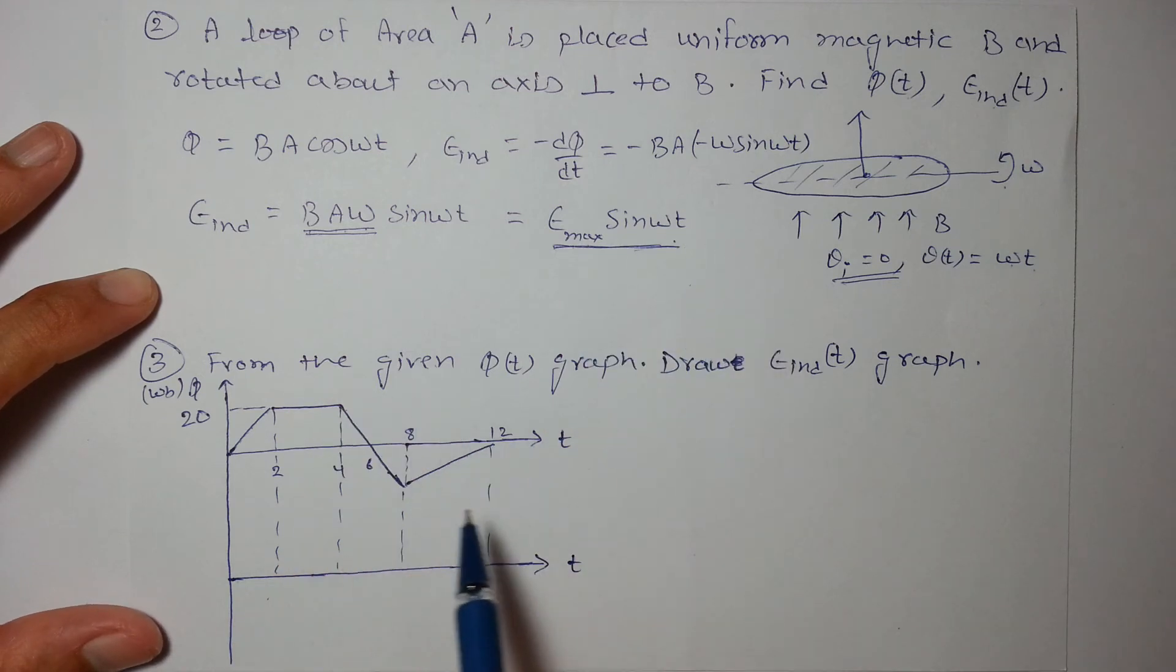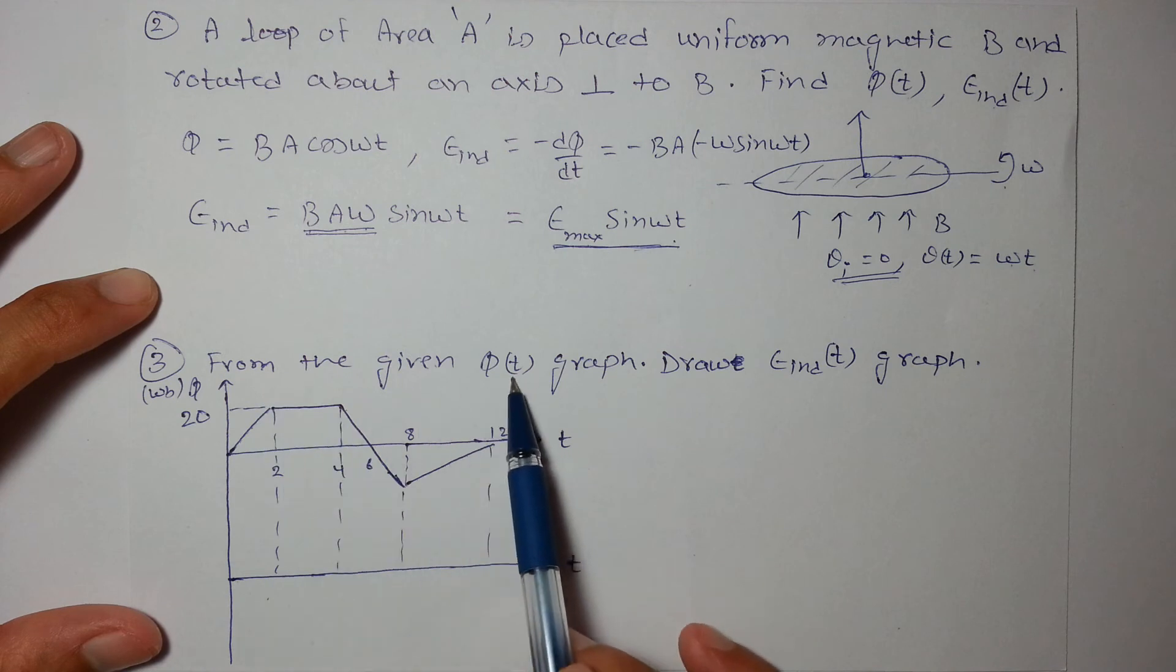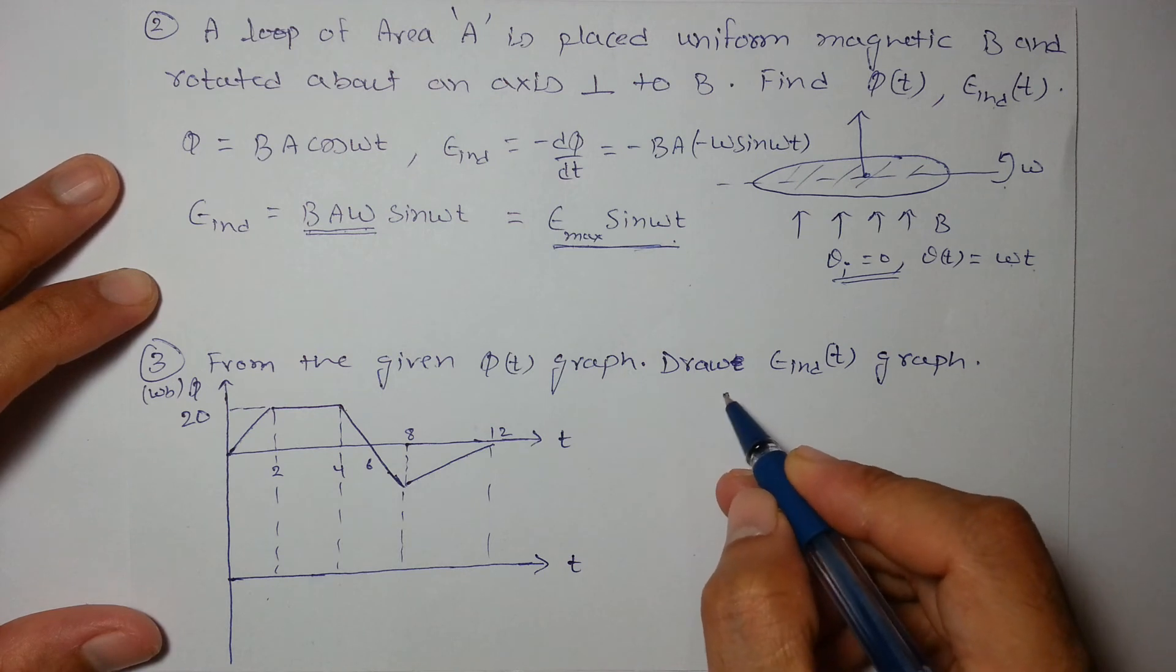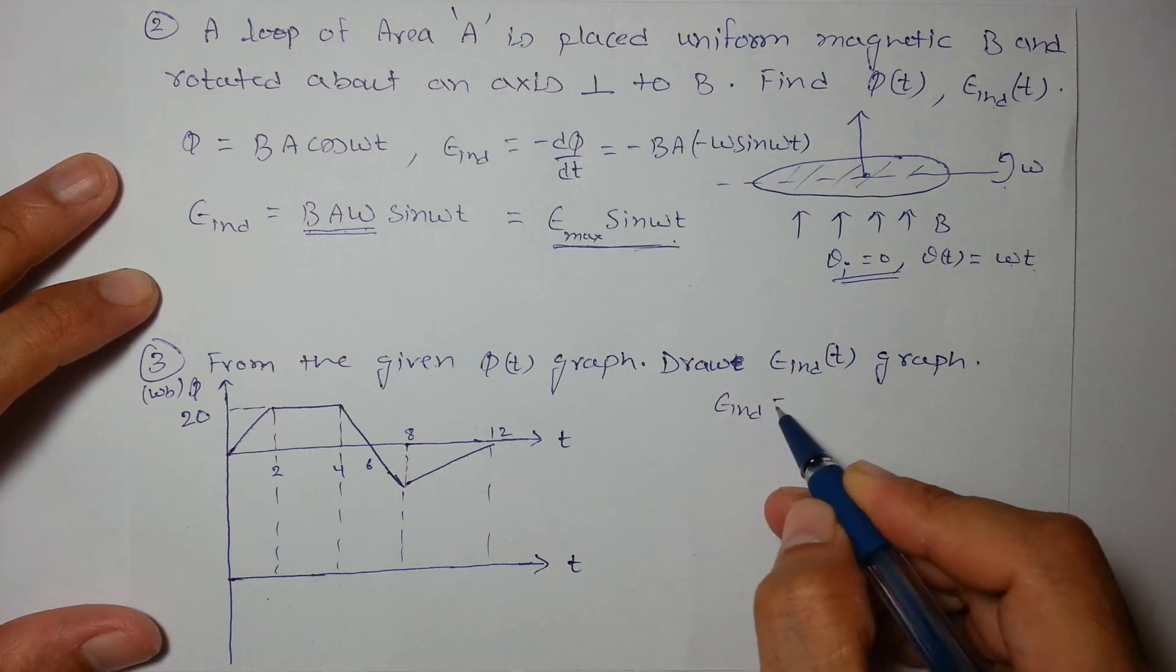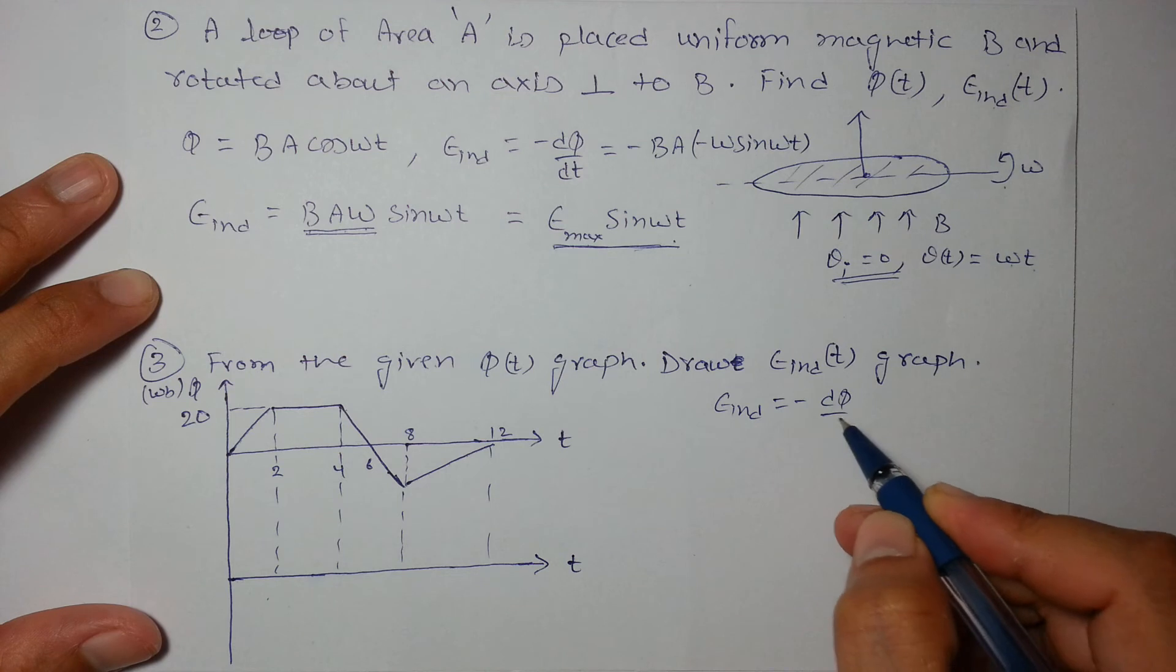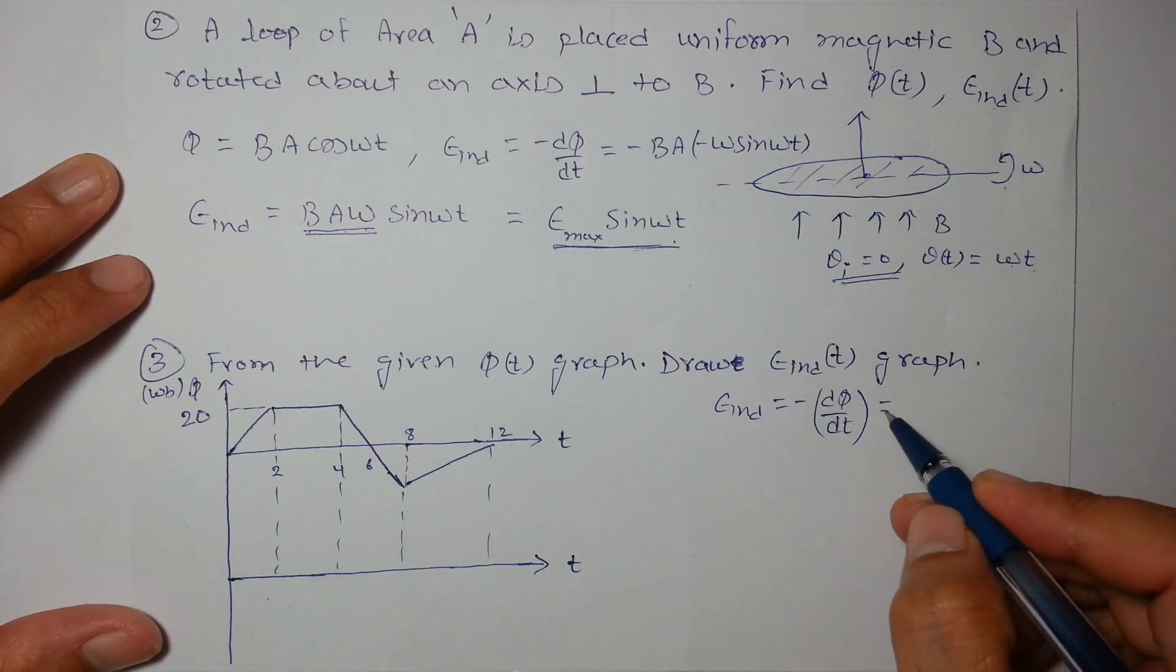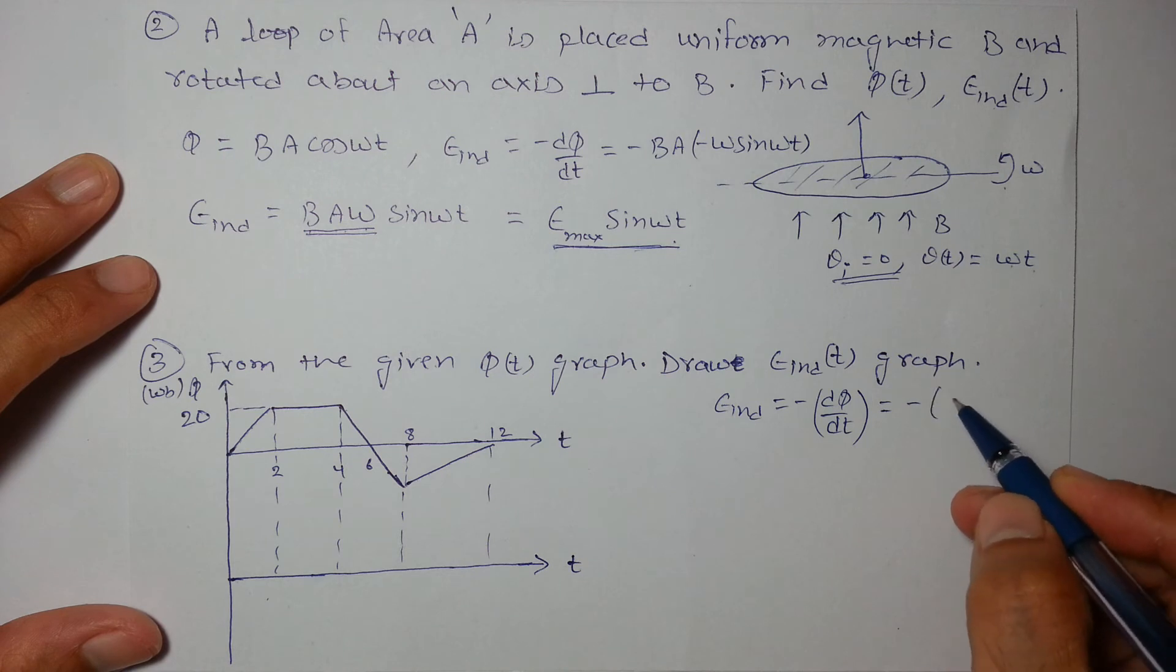Then from the given φ-t graph, draw EMF induced as a function of time. As we know that EMF induced is -dΦ/dt. So from graphical point of view I can say that it is negative of slope of φ-t graph.